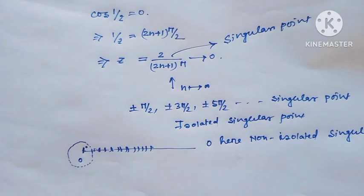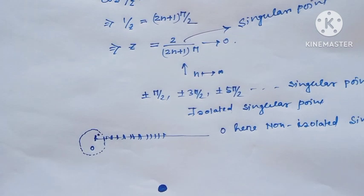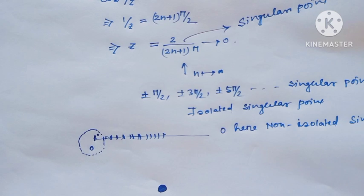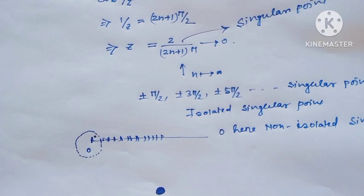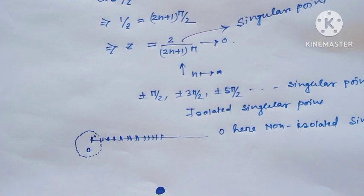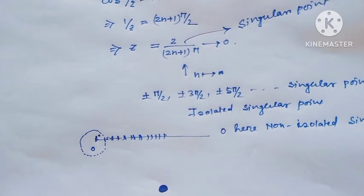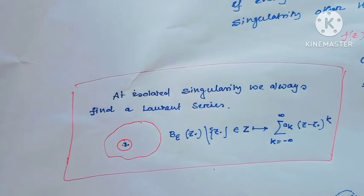When the singular points are isolated, we can always define a Laurent series. Isolated singularities are three types: pole, essential singularity, and removable singularity. When the singularity is non-isolated, we cannot define a Laurent series — we can define a Laurent series only when there exists an isolated singularity.